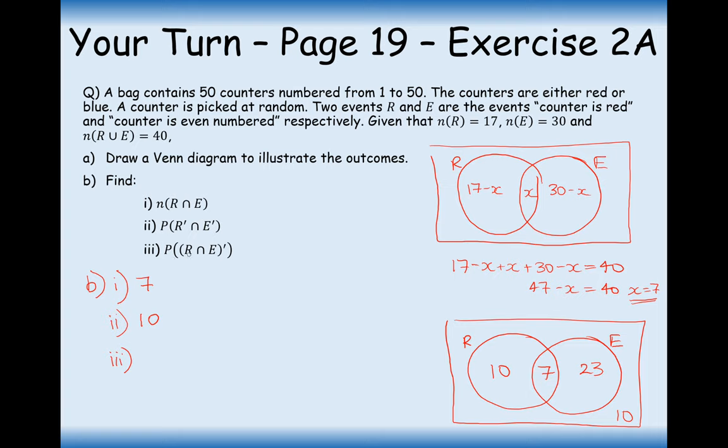Find the probability that it's red and even, but not that. The probability of it being red and even is 7, so red and even not is going to be 43 out of 50. That's the final answer to this question, 43 out of 50.